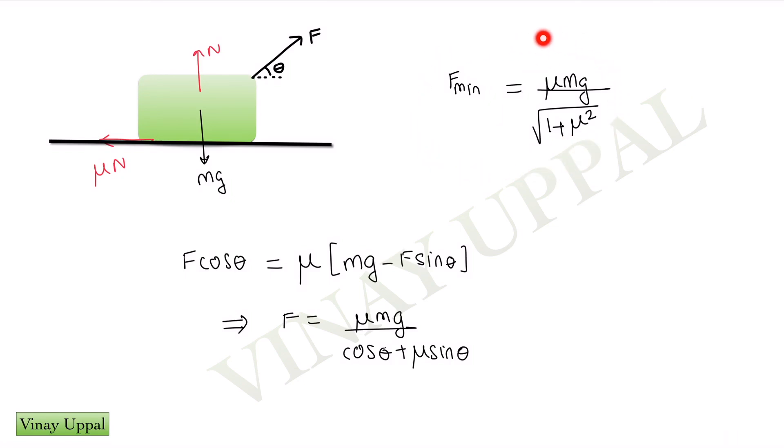So this is a result that all of you should know and remember but I'll just quickly show you in case you don't know how to derive it. So this is the FBD here, the force f external force acting at an angle theta to the horizontal, the normal force, gravity and mu n. So in the vertical direction, I can write n plus f sine theta should be equal to mg. So I get my normal force as mg minus f sine theta and in the horizontal direction, f cos theta should just be able to overcome mu n. So I've just written f cos theta should be equal to mu n and n is mg minus f sine theta.